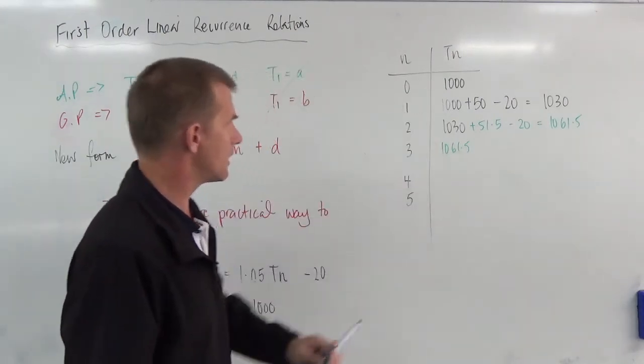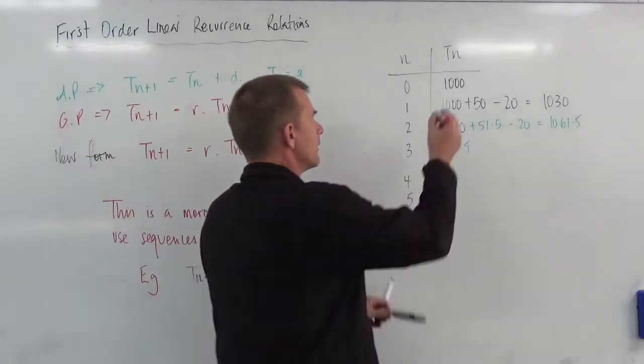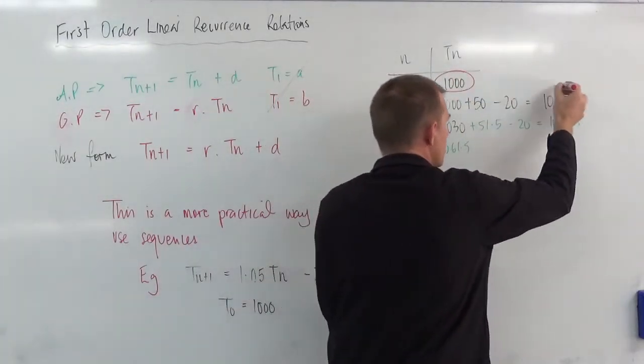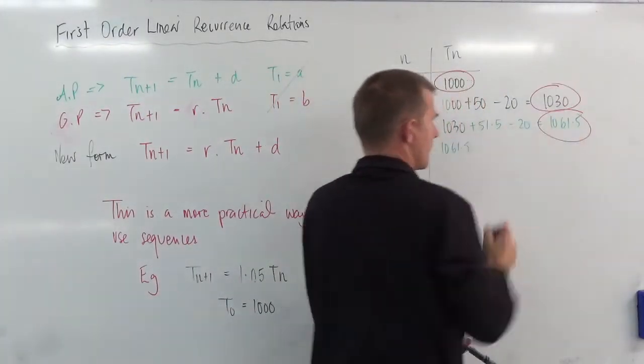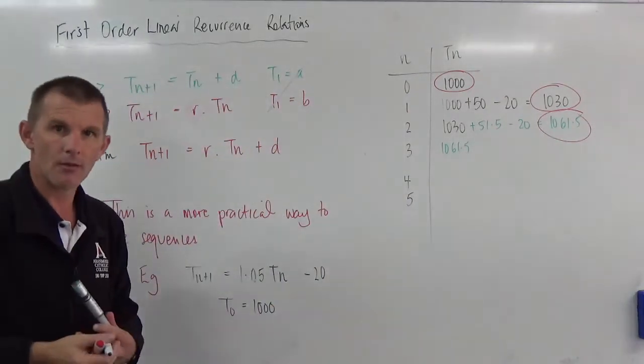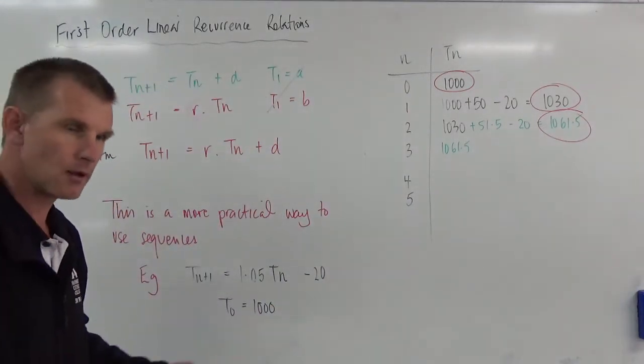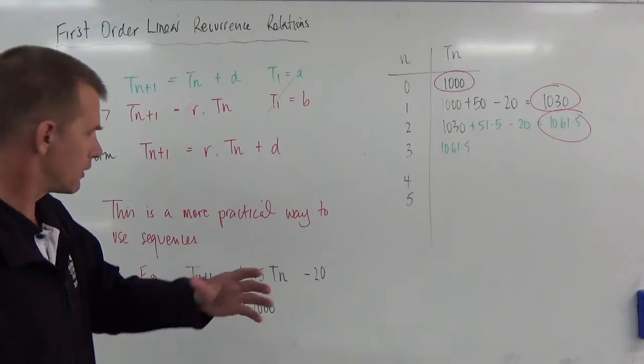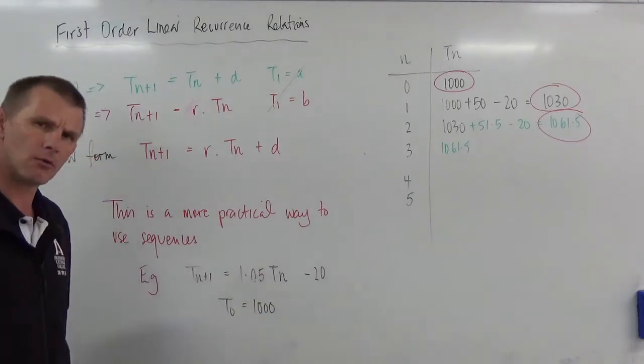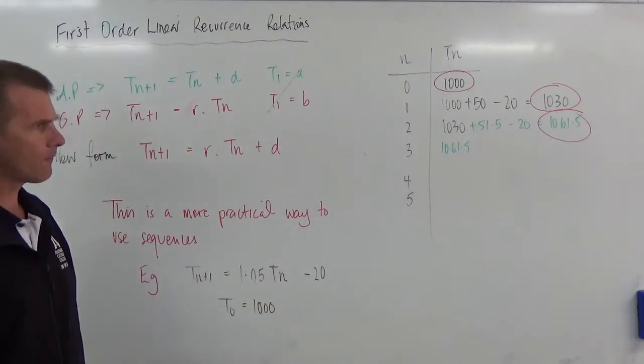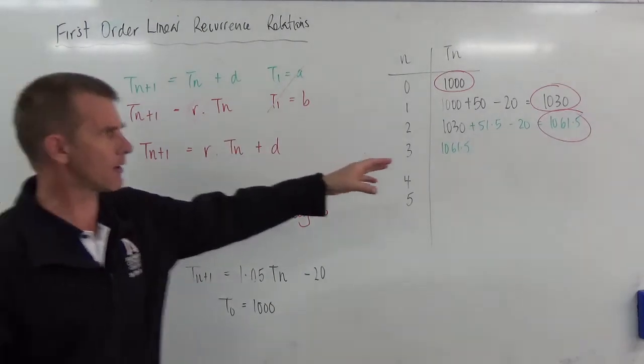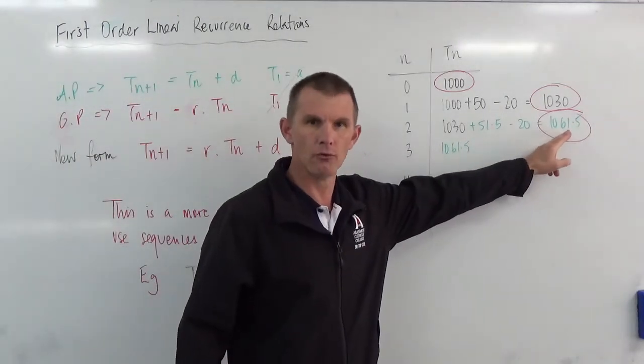Now, you can see here what's actually happening. If you just look at these values, started there, came to there, came to there. So that would mean that my population is growing over time. Now, you as the farmer might then go, you know what? Well, fair enough.